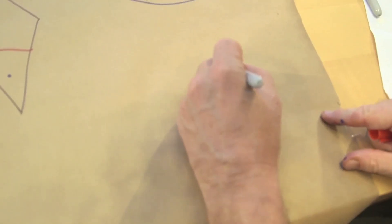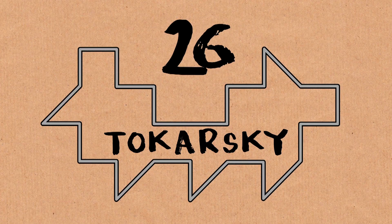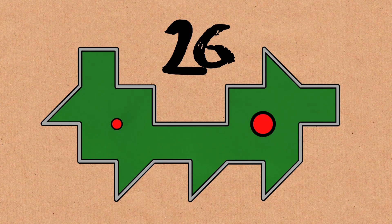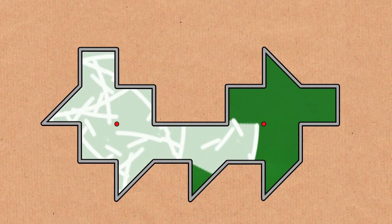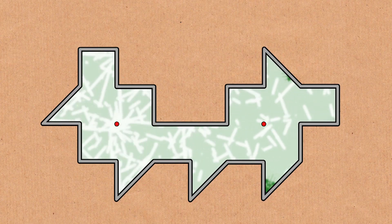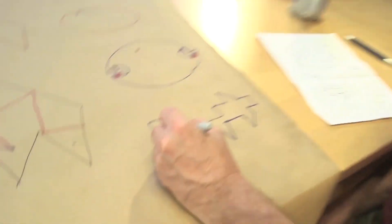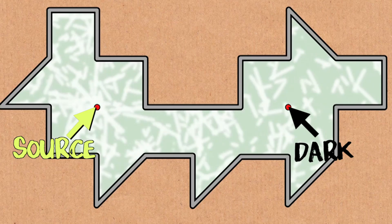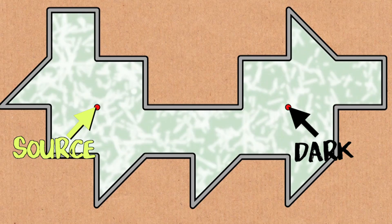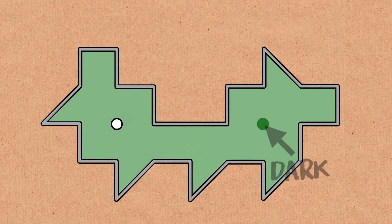What Penrose showed was that no matter where you put the candle, there will always be dark regions in this shape that are not illuminated. In 1995, Tokarski found an example of a 26-sided polygon and a candle placement where a specific other point was not illuminated. The difference from the Penrose example is that in Penrose's case there was a whole region — a patch — that was dark, whereas in Tokarski's example it was essentially a single point.